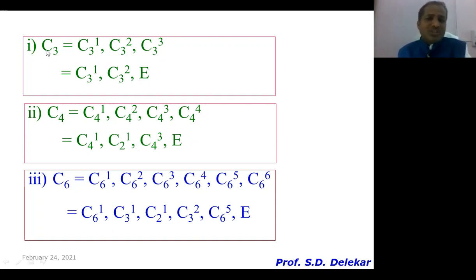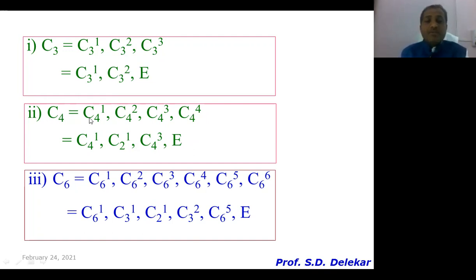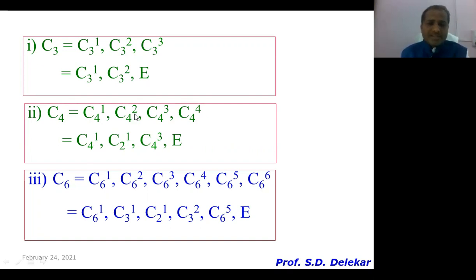So the C3 element generates three subelements: E, C3¹, and C3². Similarly, for C4, there are four subelements. C4¹ remains as it is. C4² is simplified as C2¹ — because two times four-fold axis of symmetry is equivalent to one time two-fold axis of symmetry.